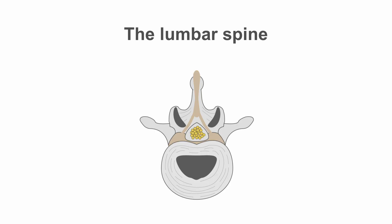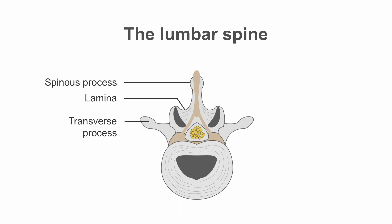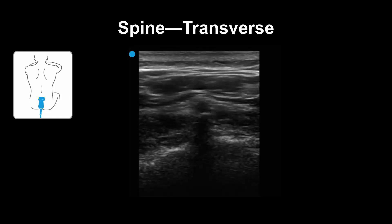In the transverse plane, this is what the lumbar vertebral body looks like. You can see the spinous process, lamina, transverse process, and facet. Here on the right is what this view would look like on ultrasound. The spinous process is the rounded peak with the corresponding shadow — this is important as the spinous process marks the midline of the spine. I find it useful to identify the spinous process first and then rotate to long axis to find the next spinous process.